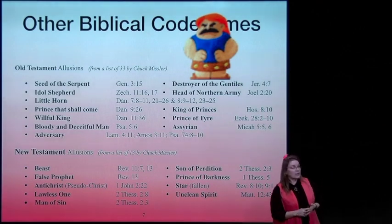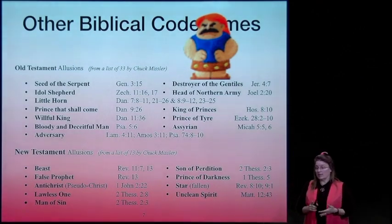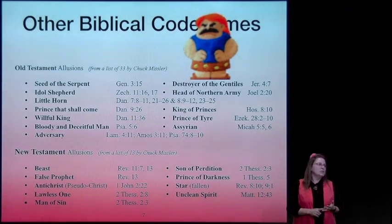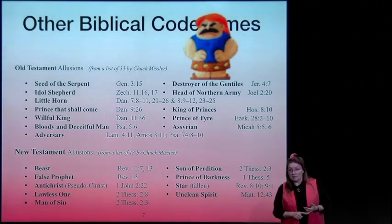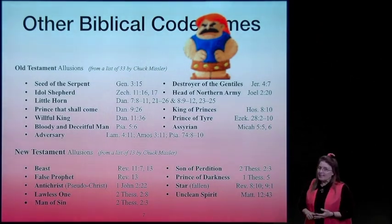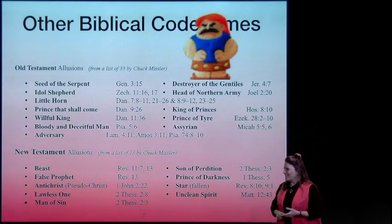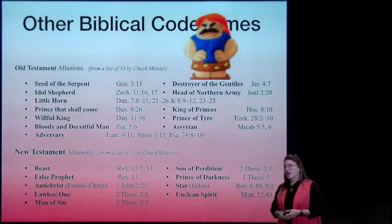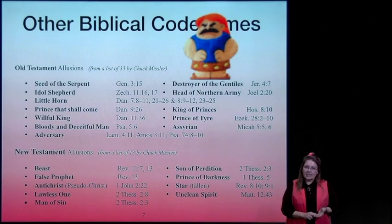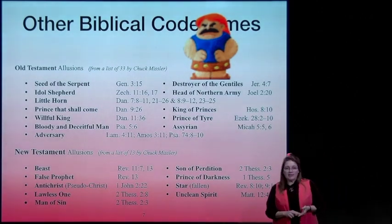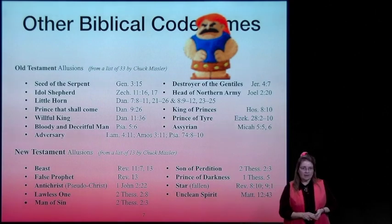In Daniel chapter 11 verse 21, he's called the vile person; a bloody and deceitful man in Psalms; our adversary and destroyer of the Gentiles in Jeremiah; head of the northern army in Joel—and remember, he's our first mention of the day of the Lord; king of princes in Hosea; prince of Tyre in Ezekiel; and the Assyrian in Micah.